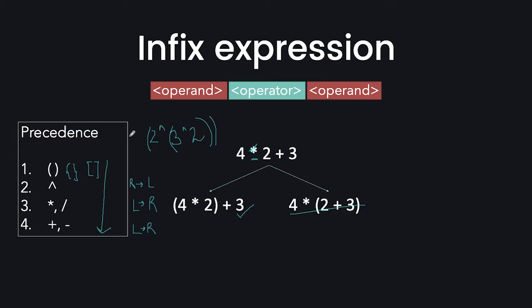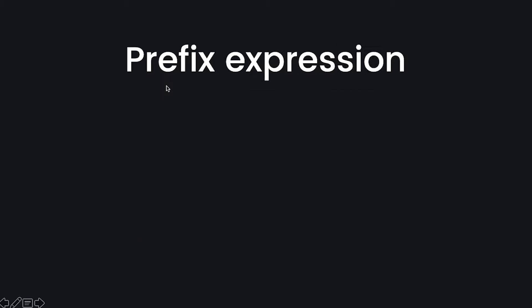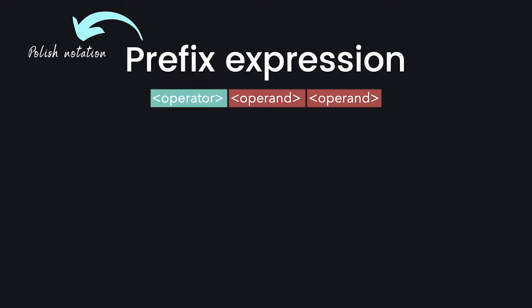We know what happens to our operators with precedence and associativity. But does a computer know this precedence? No. So this is where prefix expression comes in — we also call it Polish notation. In prefix notation, the operator comes first, and after that the two operands follow. So this is my infix notation, and this is its prefix notation.